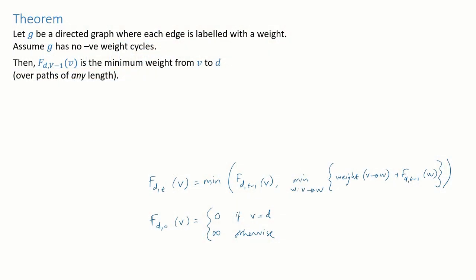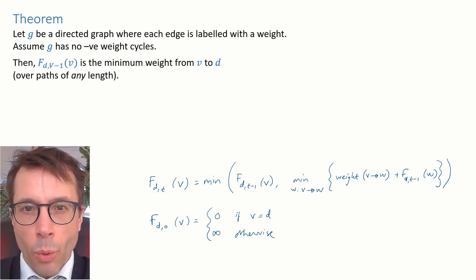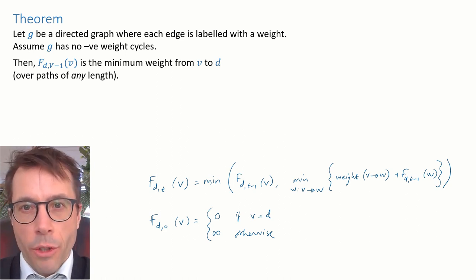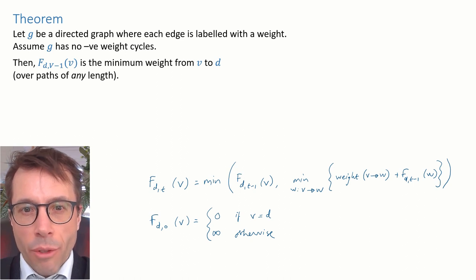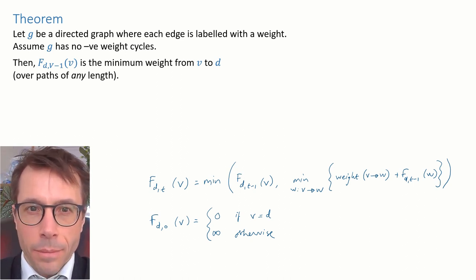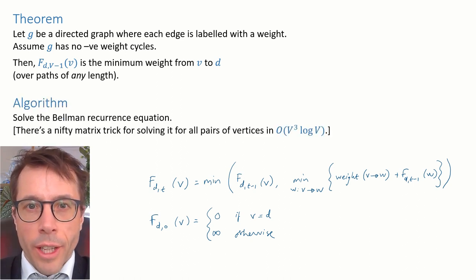Pause the video and have a quick read through of this theorem. This theorem tells us that if we set the time horizon to be v minus one, where v is the number of vertices in the graph, then our value function f gives us minimum weights—the minimum weight over paths of any length. And so this theorem pretty much tells us directly an algorithm for computing minimum weights, which has solved the Bellman recurrence equation up to time v minus one.